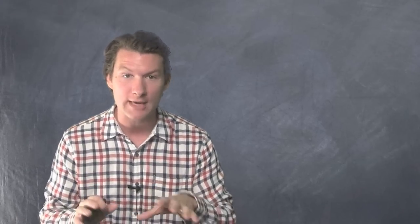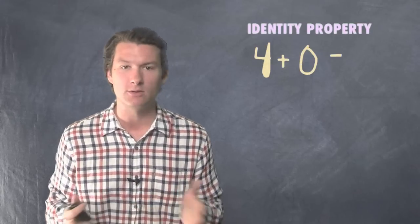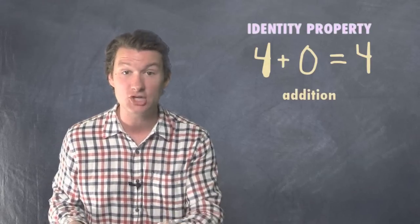All right, so what the identity properties have in common is they're both about keeping numbers the same. Like if you've got some number and you add zero to it, you've still got that same number. That's the identity property of addition.